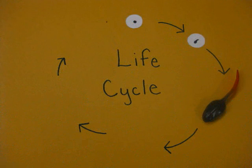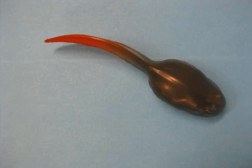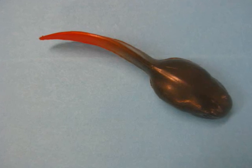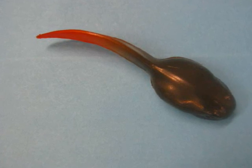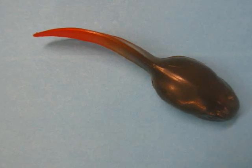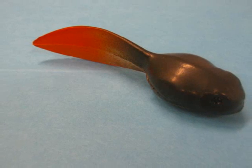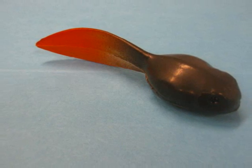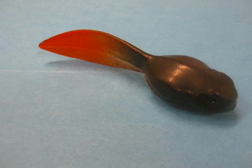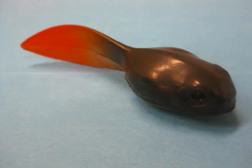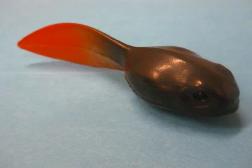The third stage is the tadpole. The embryo hatches from the egg and lives in the water. It uses its gills to breathe in the water. The tadpole has a long tail and looks a lot like a fish.